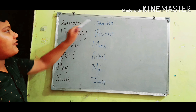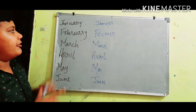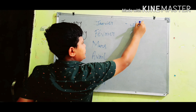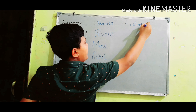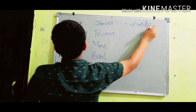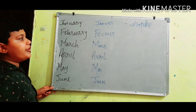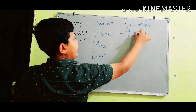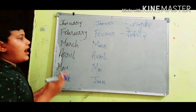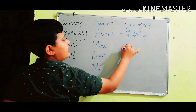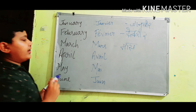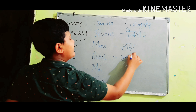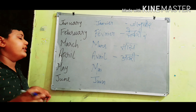January is janvier — janvier. February is février — février. March is mars — mars. April is avril — avril. You can pronounce it avril or avril.